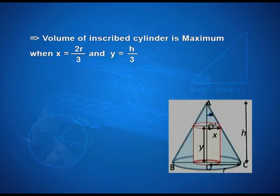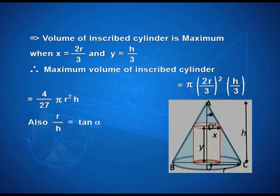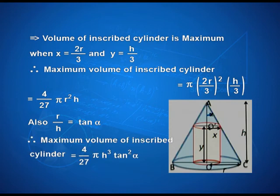We want the maximum volume, so substituting x = 2R/3 and y = h/3 we get (4/27)πR²h. But the question asks for an expression in terms of alpha, so we relate h and R through trigonometry: tan α = R/h, so R = h tan α. Replacing R gives the maximum volume of the inscribed cylinder as (4/27)π h³ tan²α — exactly what the question required.